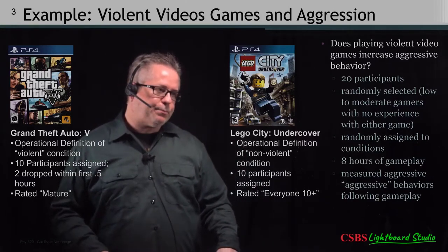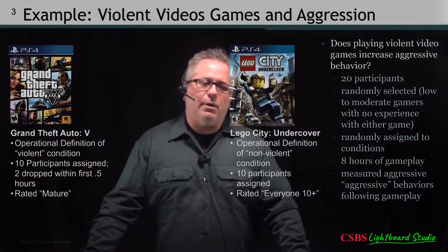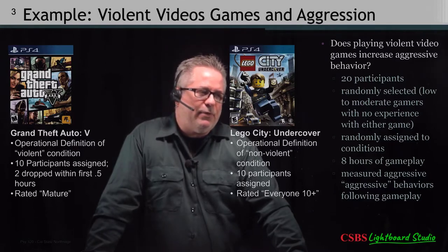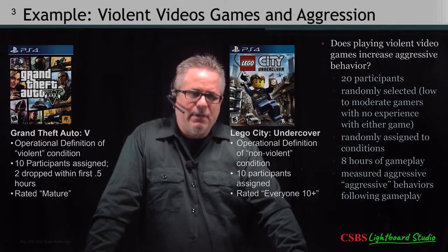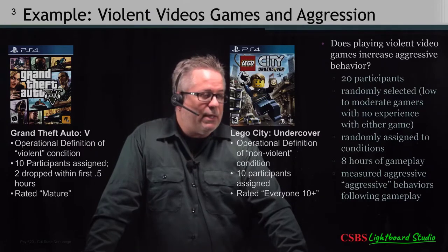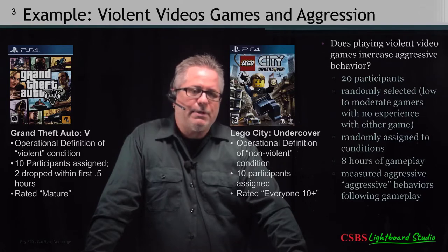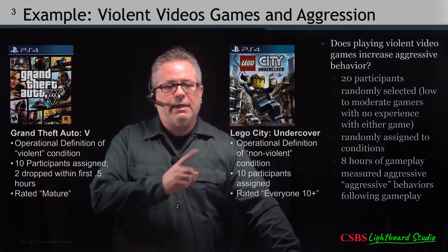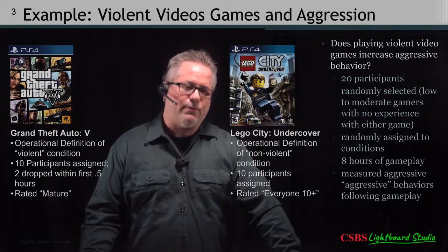A couple of things to keep in mind. Of the 10 people assigned to the Grand Theft Auto game, two dropped out because they didn't want to keep playing. This illustrates an important point: we may plan a study with equal n — 10 people in each group — but that doesn't always happen. In the end, we have eight participants in one condition and ten in another, which indicates that this process works even when groups have different sizes.